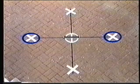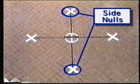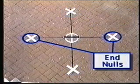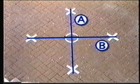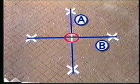Notice that these nulls appear in two pairs: one pair directly in line with the transmitter, and the other pair directly straddling the sides of the transmitter. The nulls straddling the sides of the transmitter are called side nulls. The nulls that are in line with the transmitter are called end nulls. If a line is drawn through the side nulls — line A — and a second line is drawn through the end nulls — line B — then the transmitter itself is located at the intersection of these two lines.